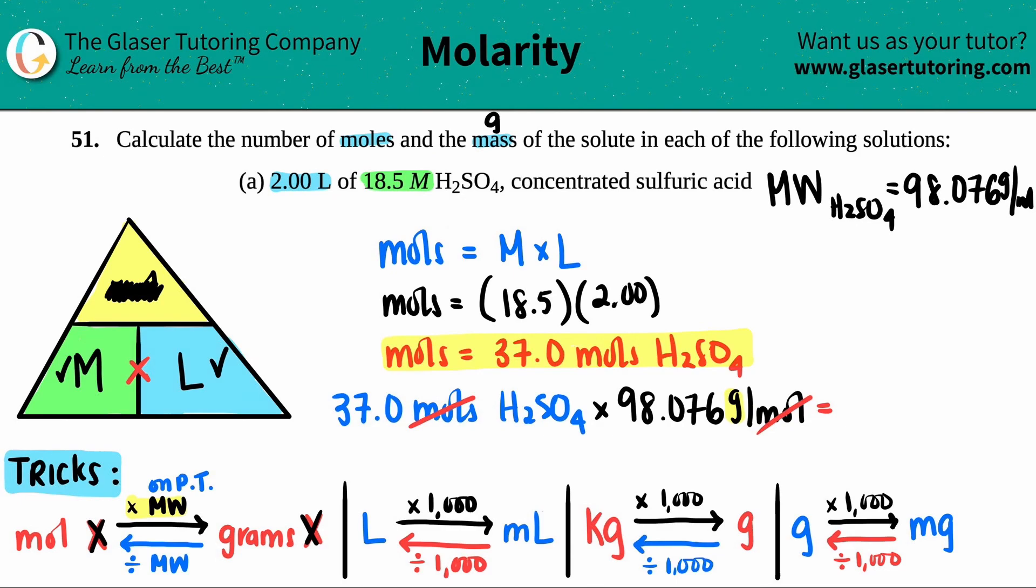So 37.0 times that molecular weight, three sig figs if we want to play a sig fig game. So I'm just going to round this up. I could either say that this is 3,630 grams of H2SO4, but this is the same thing as 3.63 times 10 to the third grams of H2SO4, and that's it.